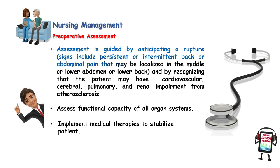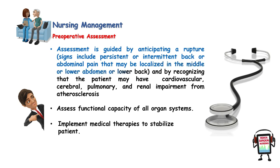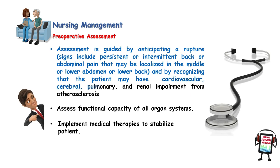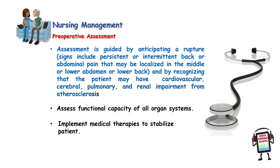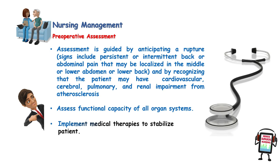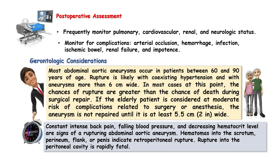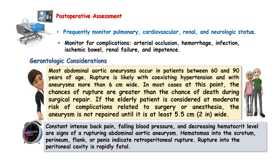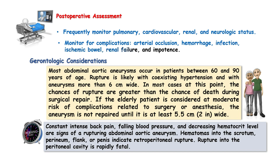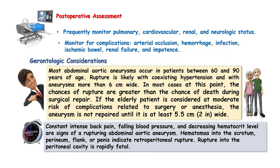Nursing management — preoperative assessment: assessment is guided by anticipating a rupture. Signs include persistent or intermittent back or abdominal pain localized in the middle or lower abdomen or lower back, and recognizing that the patient may have cardiovascular, cerebral, pulmonary, and renal impairment from atherosclerosis. Assess functional capacity of all organ systems and implement medical therapies to stabilize the patient. Postoperative assessment: frequently monitor pulmonary, cardiovascular, renal, and neurologic status, and monitor for complications such as arterial occlusion, hemorrhage, infection, ischemic bowel, renal failure, and impotence.